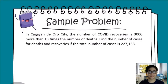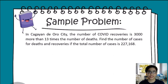Here's a sample problem. In Cagayan de Oro City, the number of COVID recoveries is 3,000 more than 13 times the number of deaths. Find the number of cases for deaths and recoveries if the total number of cases is 227,168. With this, we have to determine first the number of deaths to get the total number of recoveries.